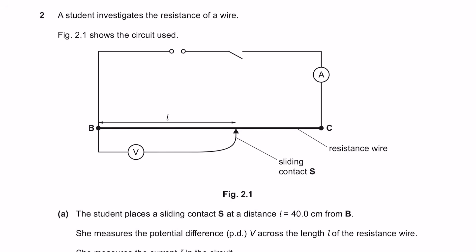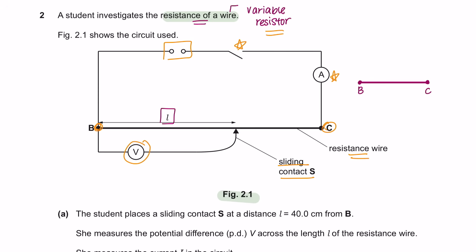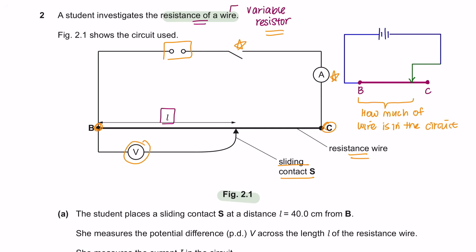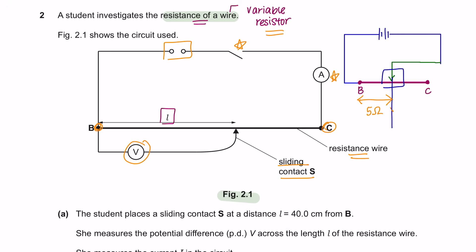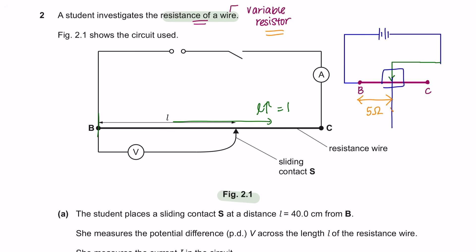Question 2. A student investigates the resistance of a wire. Figure 2.1 shows the circuit used — you have the power source, a switch, an ammeter to measure current, and from point B to C a resistance wire, with a voltmeter attached to the sliding contact. This is a variable resistor: resistance changes based on length. Moving the sliding contact changes how much wire is in the circuit. If the full wire is 10 ohms and the contact is in the middle, you get about 5 ohms. As length increases, resistance increases.